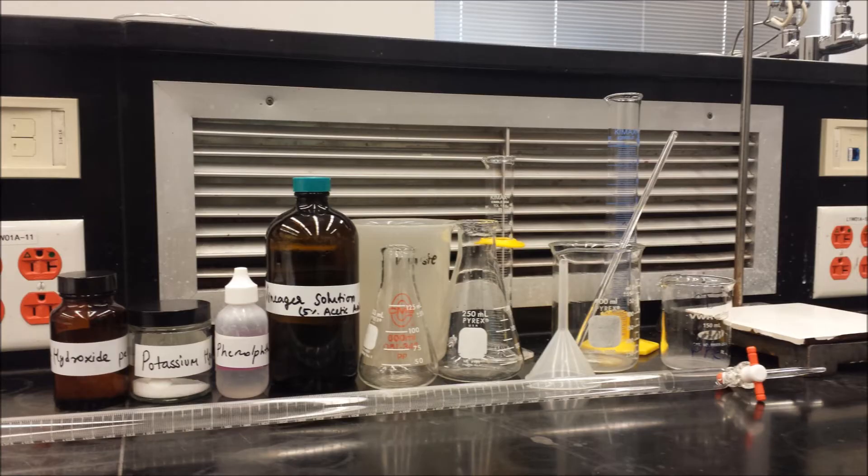Here are the materials you will be using throughout the experiment: a ring stand with a clamp, a white tile, a burette, a funnel, graduated cylinders, a stirring rod, a 150ml and 250ml Erlenmeyer flask, a 150ml and 400ml beaker, sodium hydroxide, potassium hydrogen phthalate, phenolphthalein, vinegar, and a waste bucket.